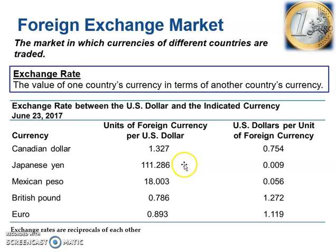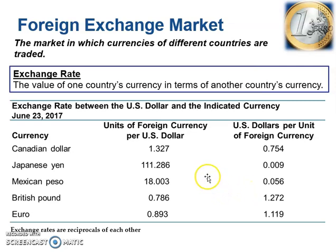Alternatively, another way of looking at that is for every yen, you're going to pay just under one penny — 0.009 U.S. dollars. It's important when evaluating exchange rates to determine whether the numbers correspond to units of foreign currency per U.S. dollar or U.S. dollars per unit of foreign currency.